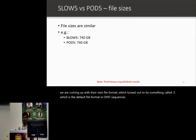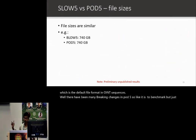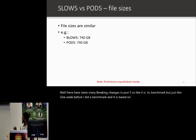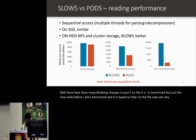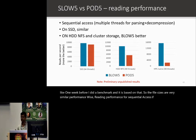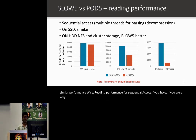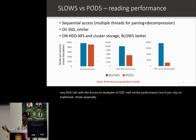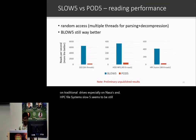There have been many breaking changes in Pod5, so it's hard to benchmark, but I did a benchmark just one week before this talk. File sizes are very similar. For sequential read performance: if you're a well-resourced lab with terabytes of SSD, performance is similar. But if you rely on traditional hard drives, especially on NAS and HPC file systems, SLOW5 seems to be still better. For random access performance, SLOW5 is still a lot better.